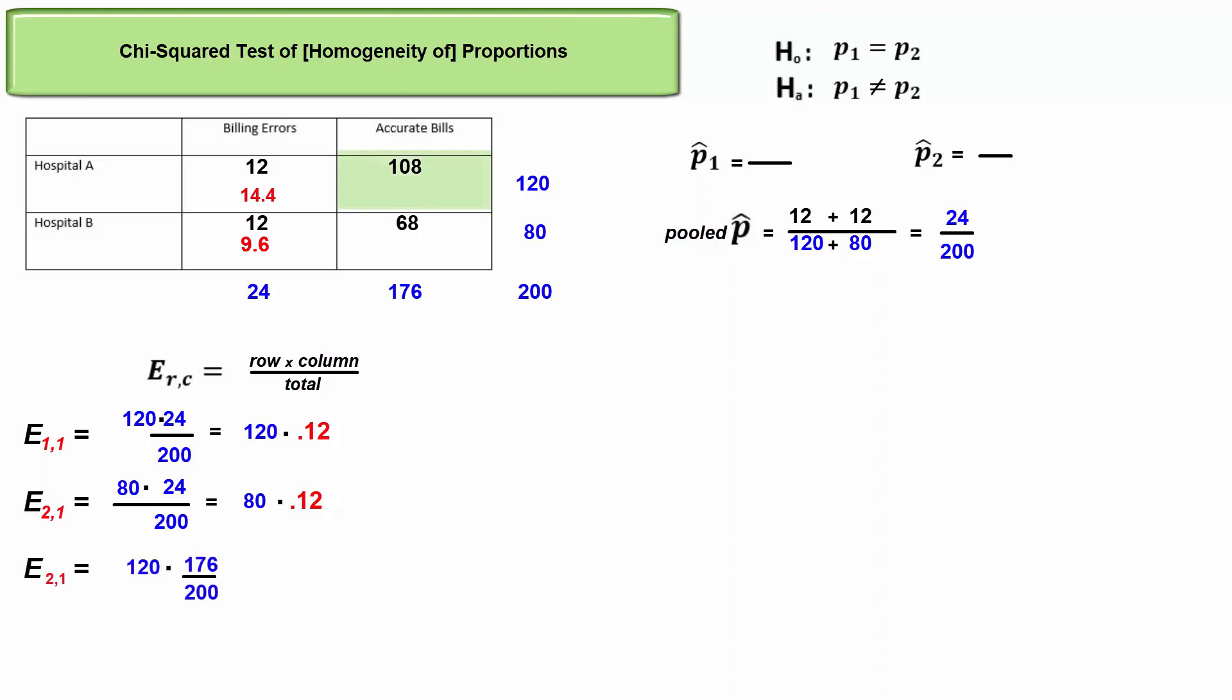And the other two cells are the expected failures. One minus p, or 88 percent failure rate, multiplied by the sample sizes.